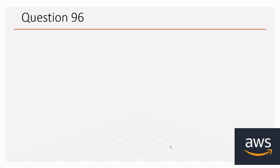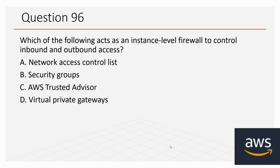Question number 96: Which of the following acts as an instance-level firewall to control inbound and outbound access? Options: A. Network Access Control List, B. Security Groups, C. AWS Trusted Advisor, D. Virtual Private Gateways. The correct option is B, Security Groups.